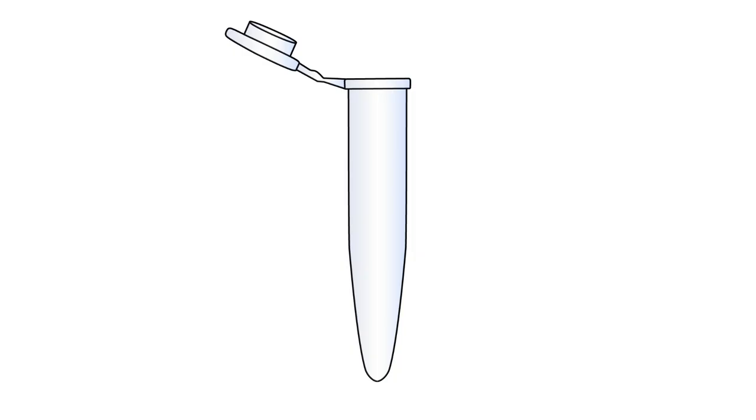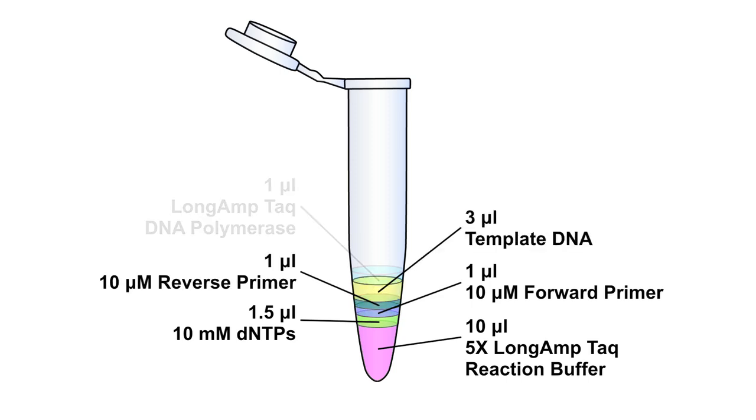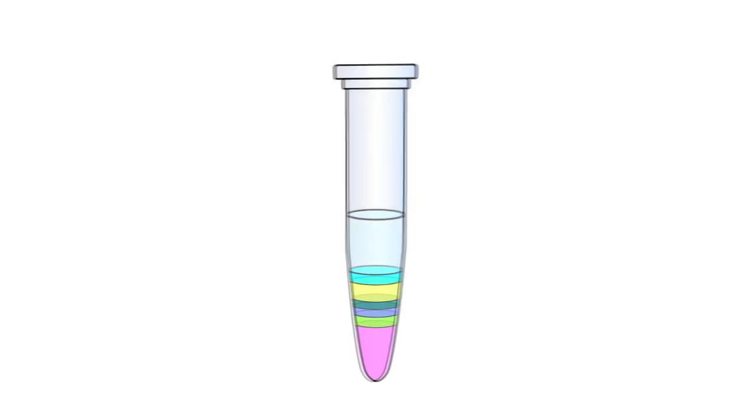To a 0.2-milliliter PCR reaction tube on ice, add 5X long amp TAC reaction buffer, dNTPs, forward and reverse primers, the previously obtained template DNA, long amp TAC DNA polymerase, and enough nuclease-free water to achieve a final volume of 50 microliters. Gently mix the reaction.